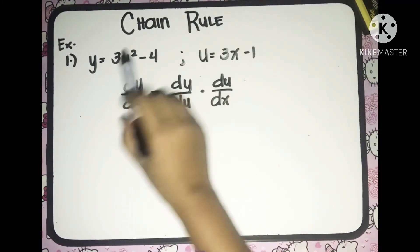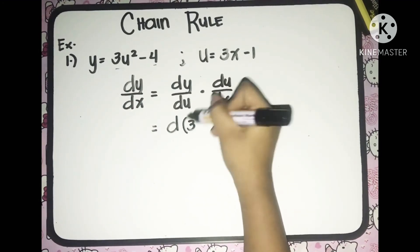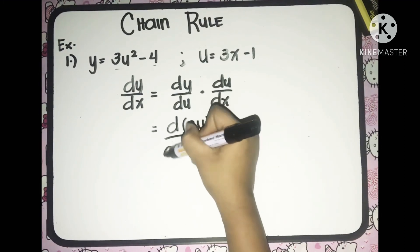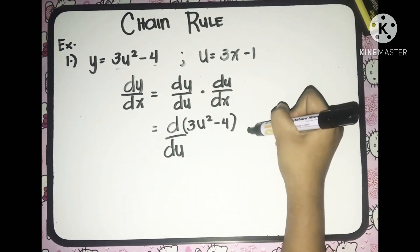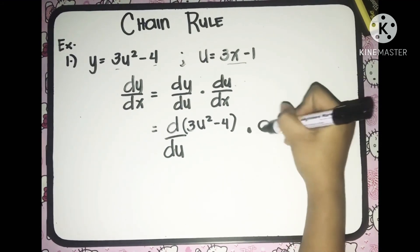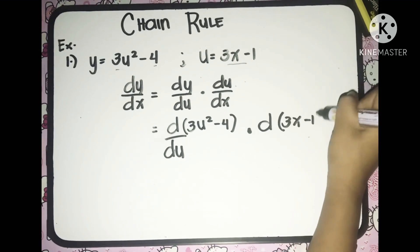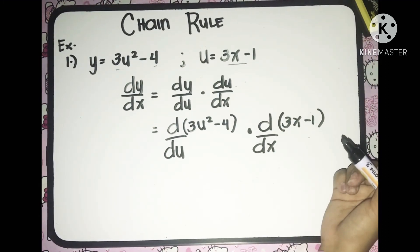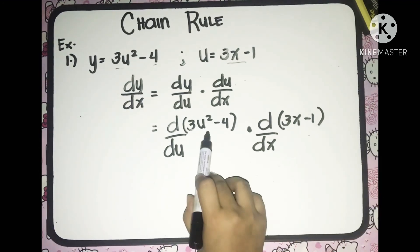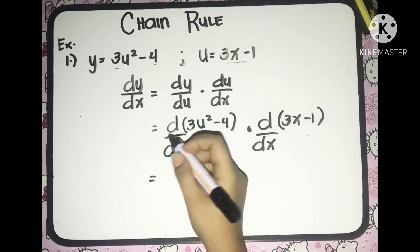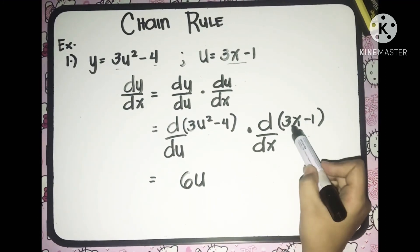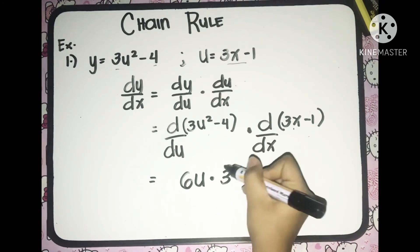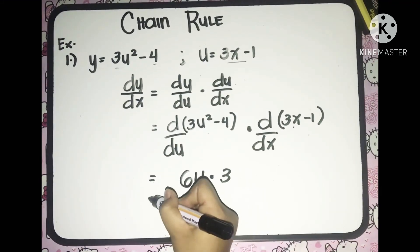So the derivative of 3u squared minus 4 with respect to u, multiplied to the derivative of u which is 3x minus 1 with respect to x. Applying the rules in differentiation, the derivative of 3u squared minus 4 with respect to u is equal to 6u, multiplied to the derivative of 3x minus 1 with respect to x which is equal to 3. Multiplying 6u by 3, it will be equal to 18u.